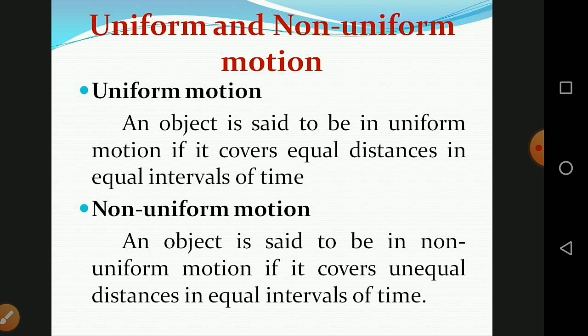An object is said to be in non-uniform motion if it covers unequal distances in equal intervals of time. For example, consider a bus starting from a stop — it proceeds slowly through a crowded area, managing to travel only 100 meters in five minutes due to heavy traffic, but is able to travel 2 kilometers in five minutes when the road is clear. Hence the motion of the bus is non-uniform — it travels unequal distances in equal intervals of time.